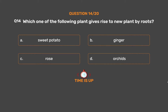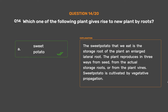The correct answer is Option A – Sweet potato. The sweet potato we eat is the storage root of the plant, an enlarged lateral root. The plant reproduces from seed, from the actual storage roots, or from the plant vines. Sweet potato is cultivated by vegetative propagation.